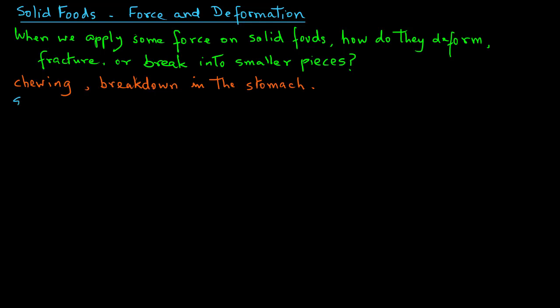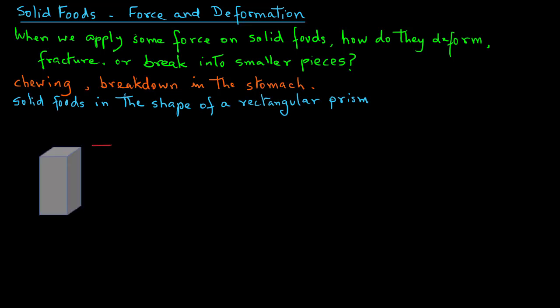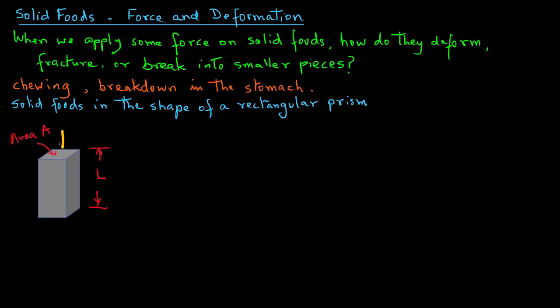So we will consider a solid food in the form of a rectangular prism. A three-dimensional representation here as shown. So the height of this solid is L and the area on the top and bottom faces is A.